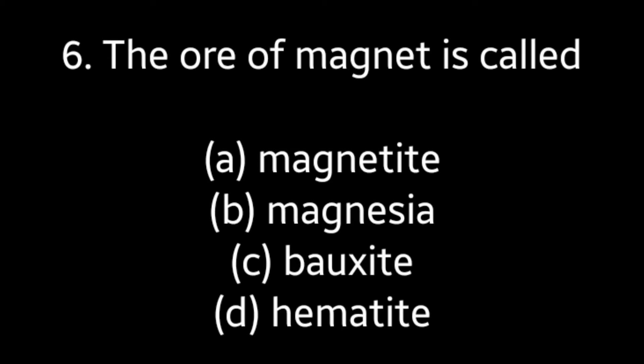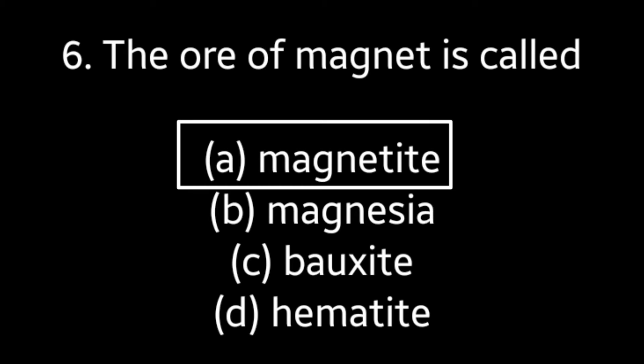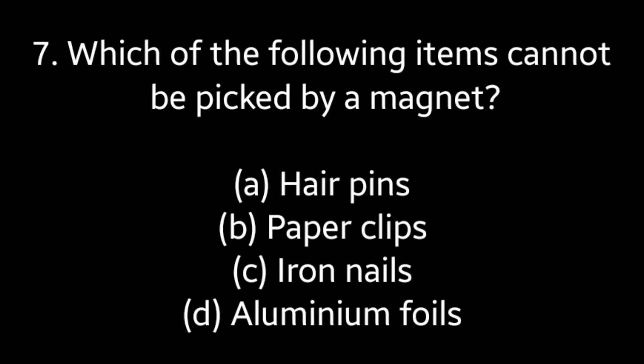Question number six: the ore of magnet is called — magnetite, magnesia, bauxite, or hematite? Answer is option A: magnetite.